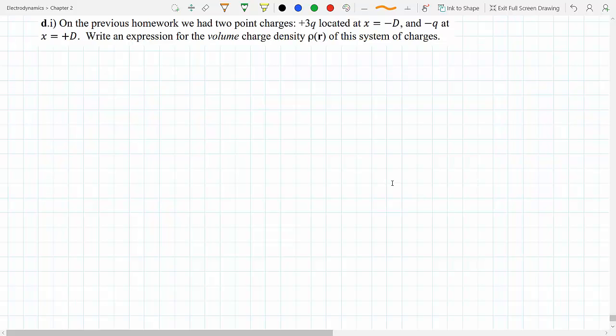We have two point charges located at x equals minus d with charge 3q, and at x equals d with charge minus q. We need an expression for the volume charge density rho of r.